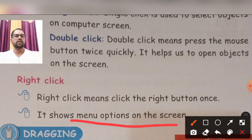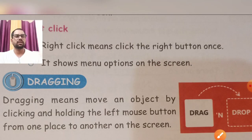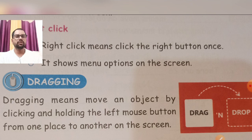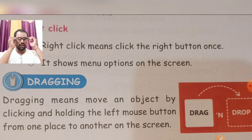Now, what is dragging? Dragging ka means kya hai — dragging means move an object by clicking and holding the left mouse button from one place to another on the screen. Dragging ka means kya hai: jo bhi hum work karte hai usko ek jagah se doosri jagah shift karne ke liye dragging ka use karte hai. Dragging ko basically use karte hai apna jo mouse ka button hai, uske through hum one place to another place drag karte hai.